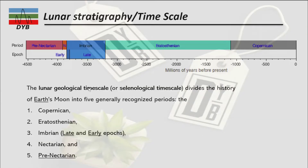Looking at the time scale of lunar stratigraphy, it has been divided into five generally recognized periods. The oldest is the Pre-Nectarian, then the Nectarian, then the Imbrian — which can be divided into Early and Late Imbrian — then the Eratosthenian, and finally the most recent period, called the Copernican. The Pre-Nectarian extends from approximately 4.5 billion years to around 3.9 billion years. The full time scale is given below in millions of years before the present.